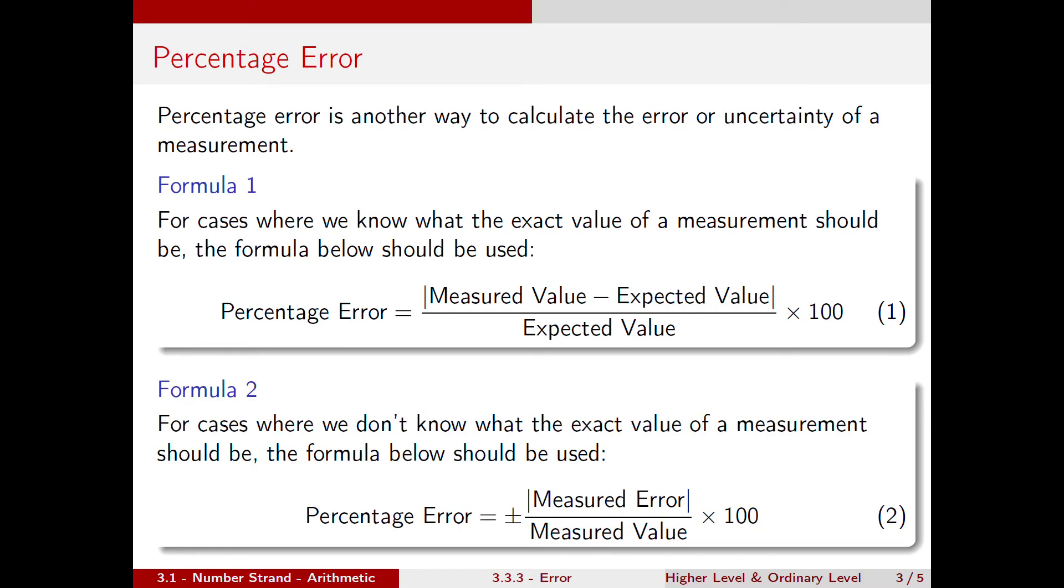In the case where we don't know what the exact value of a measurement should be, the following formula should be used. Percentage error is equal to plus or minus the absolute value of measured error, all over the measured value, times 100.